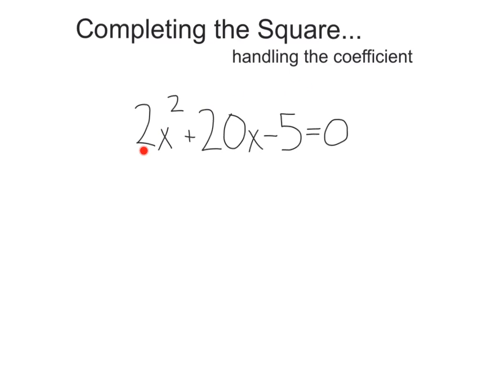Sometimes when we're completing the square, we're going to run across a coefficient of our x squared term. This can make completing the square a little bit messy, but we can still handle it.